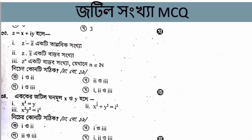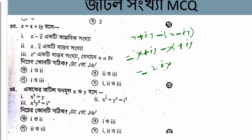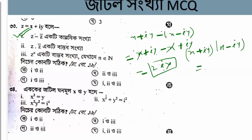Let's see — for complex numbers, Z equals x plus i times y. The property is that Z minus Z-bar equals 2iy, and Z plus Z-bar equals 2x. So Z-bar equals x minus iy, and Z minus Z-bar equals 2iy.